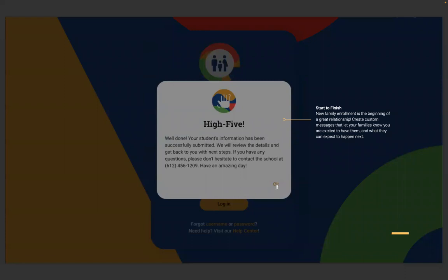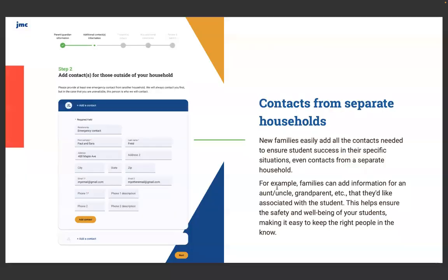Part of our refresh rollout is reflecting the fun and current aspects of JMC. You're going to see some cool, fun new prompts from start to finish as families begin and end that enrollment process, establishing that great relationship with your school right out the gate. New families can easily add all the contacts needed to ensure student success in their specific situations, even contacts from separate households. For example, families can add information for an aunt, uncle, grandparent, et cetera, that they'd like associated with the student. This helps ensure the safety and wellbeing of your students, making it easy for you to keep the right people in the know.